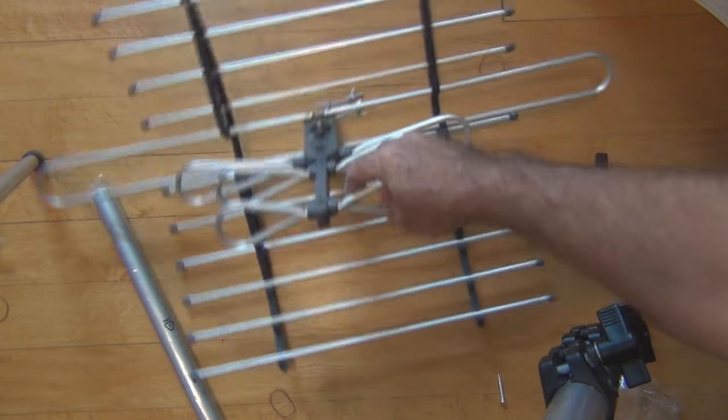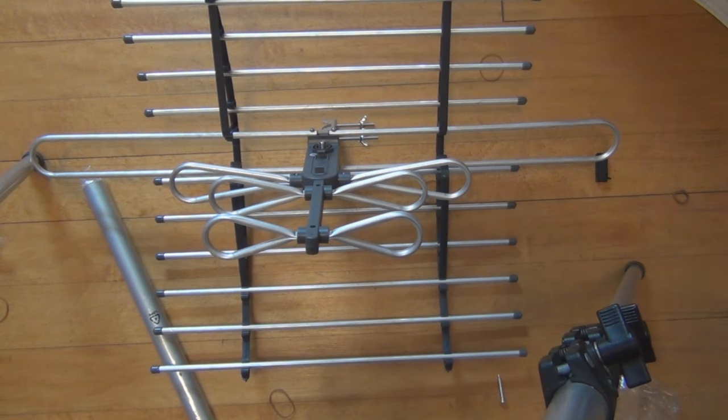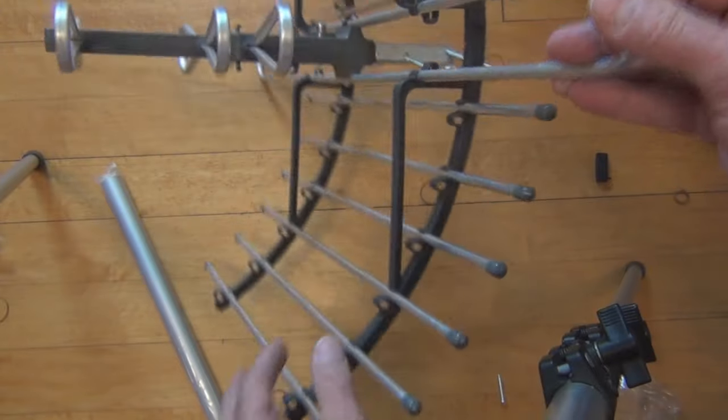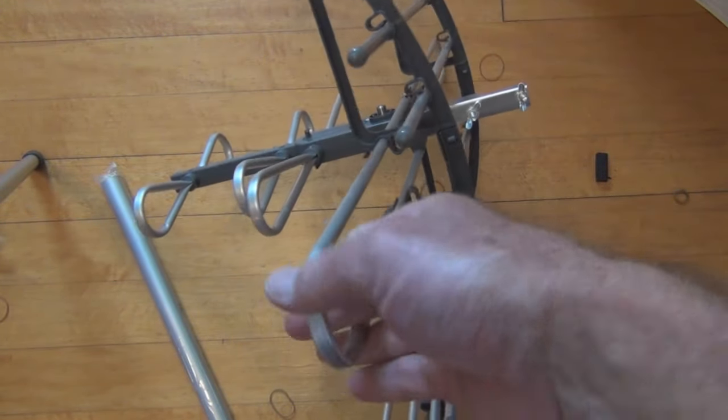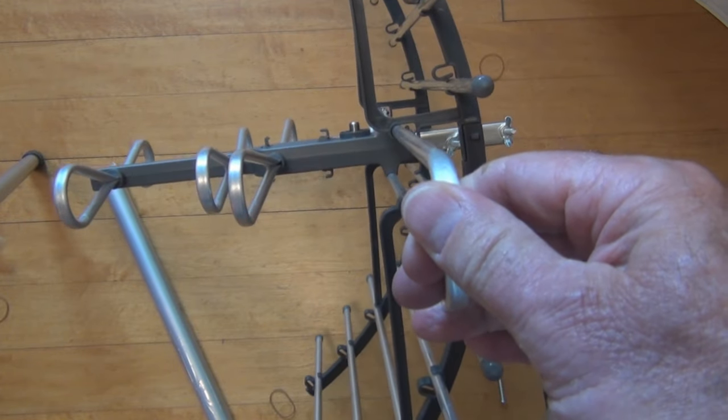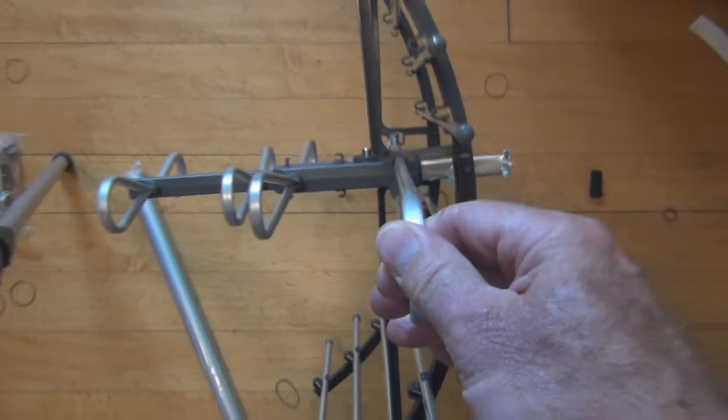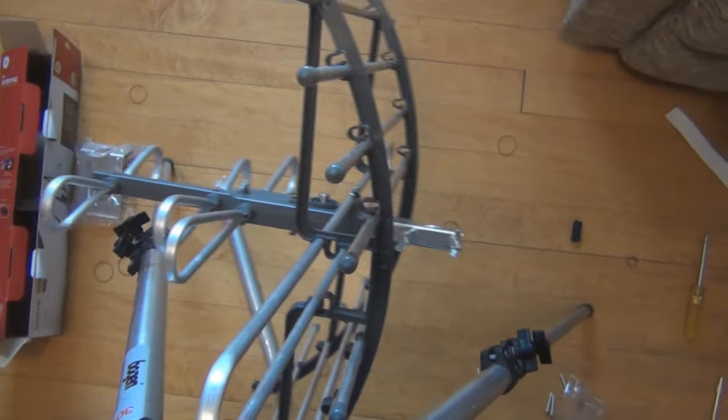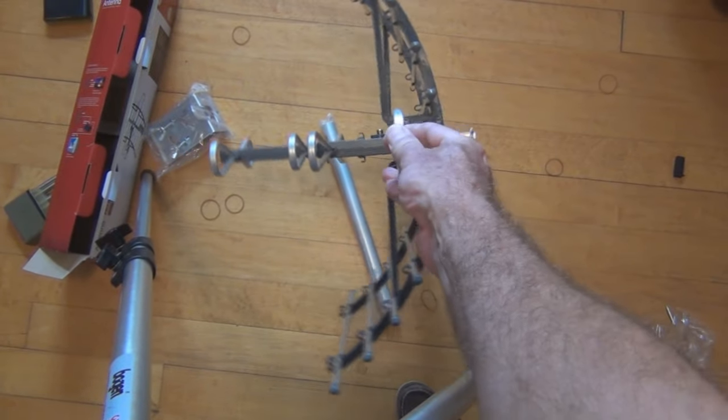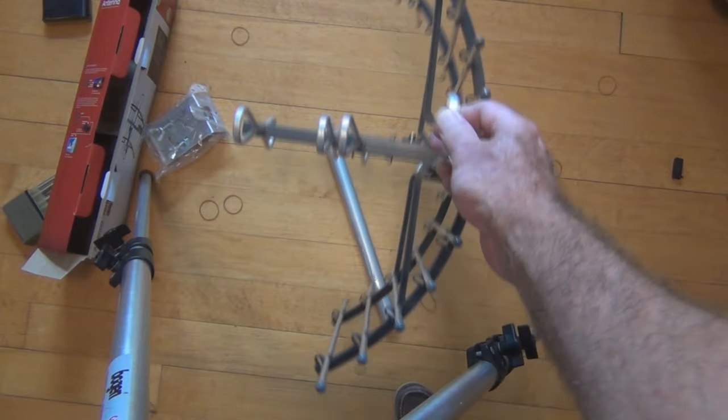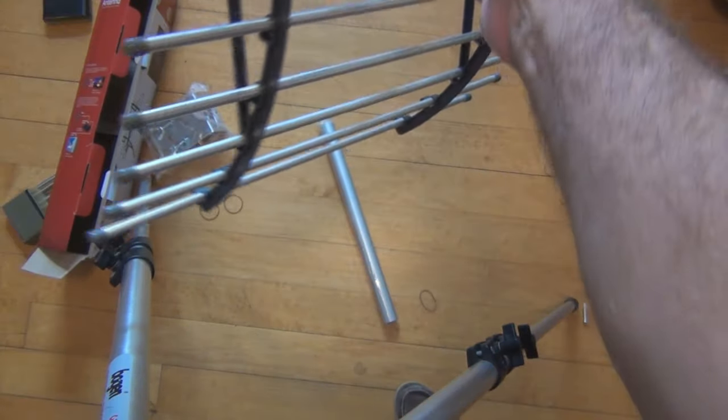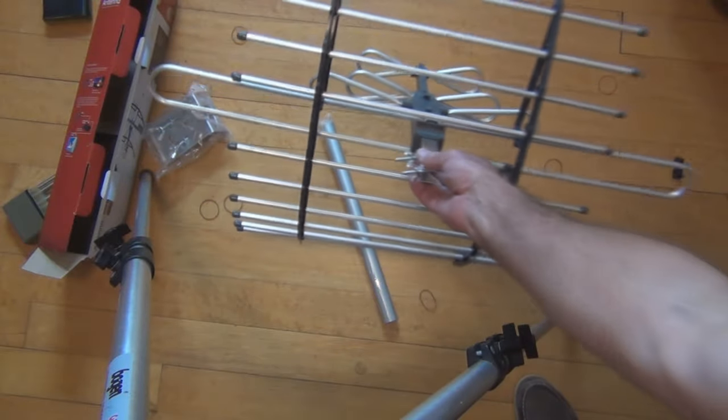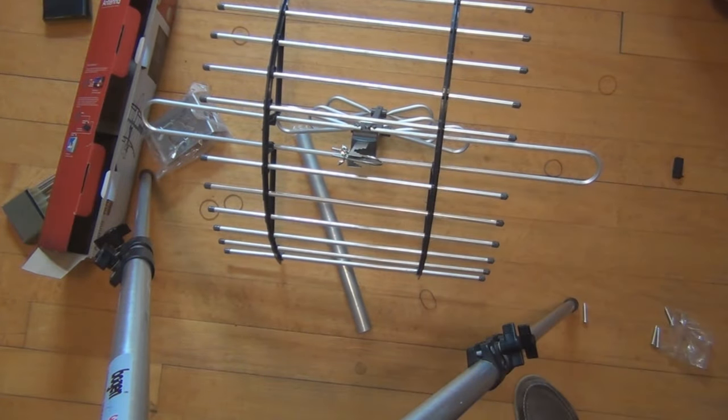Which I'm going to hook up to my rotor and compare this with the Amazon Basics flat high definition antenna. There's a side view. That's the back.